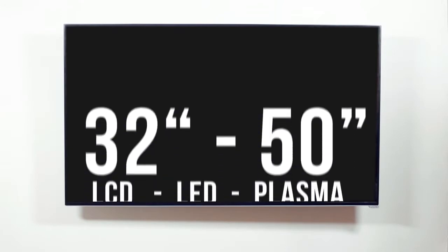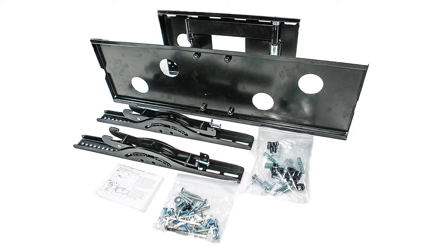The TVM A50 articulating wall mount can accommodate 32 to 50 inch TVs up to 110 pounds. Included are the articulating mounting plate, TV brackets, and hardware.